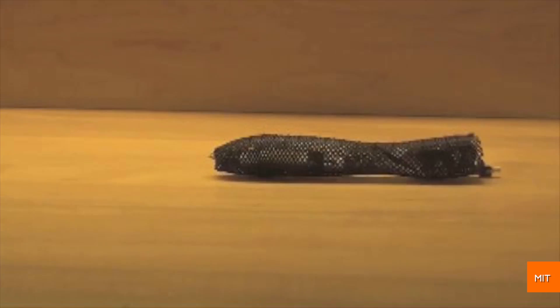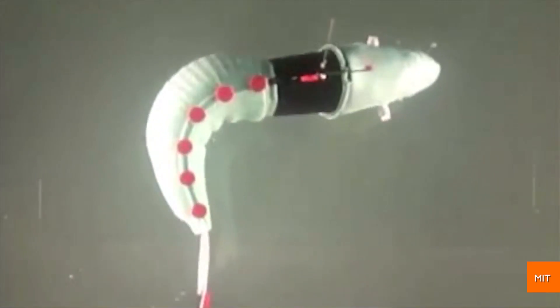MIT researchers have built soft robots before, like this earthworm. But they say the fish is the first that can make precise movements at high speed.